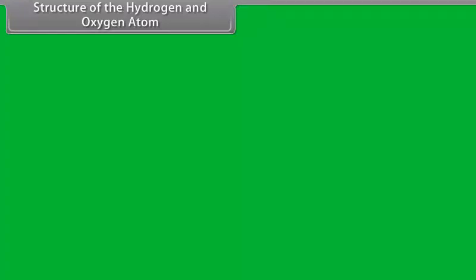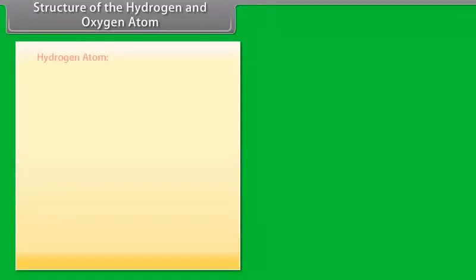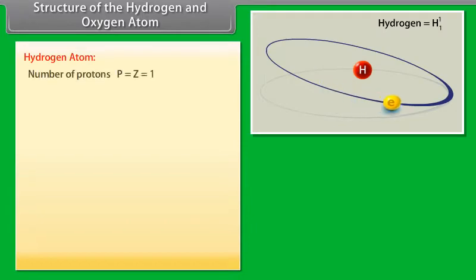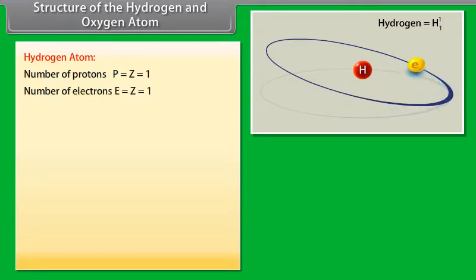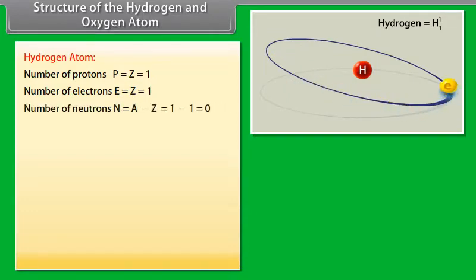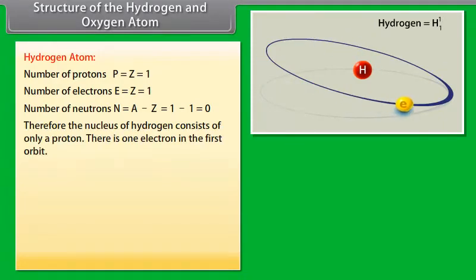Structure of the Hydrogen and Oxygen Atom. Hydrogen Atom: Number of Protons P is equal to Z is equal to 1. Number of Electrons E is equal to Z is equal to 1. Number of Neutrons N is equal to A minus Z, which is equal to 1 minus 1, which equals 0. Therefore, the nucleus of Hydrogen consists of only a proton, and there is one electron in the first orbit.